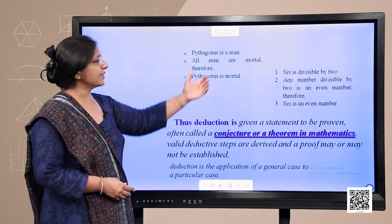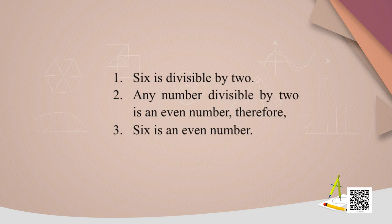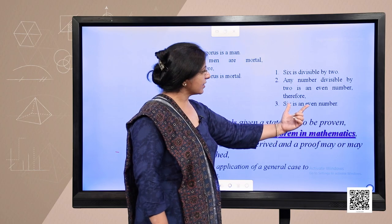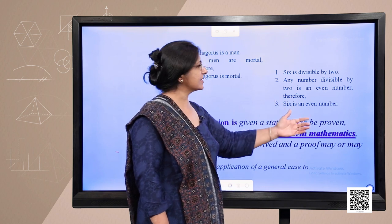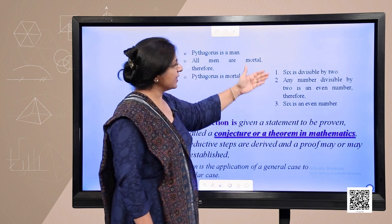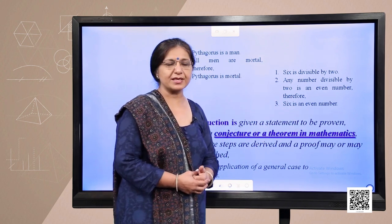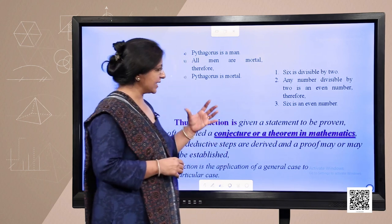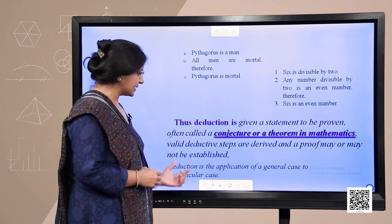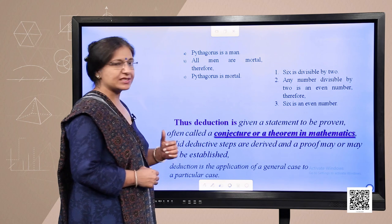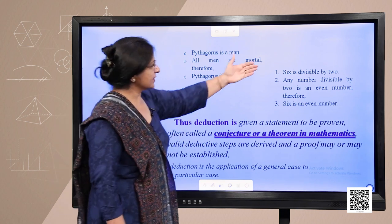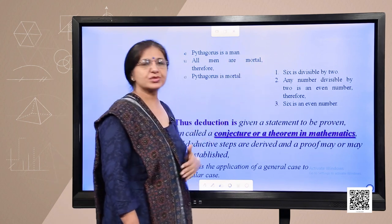Let us take another mathematical example: 6 is divisible by 2, and any number divisible by 2 is known as an even number, therefore 6 is an even number. We deduce this result depending upon the above statements. So this is the case from general to specific — these are general statements and we are coming to a specific conclusion.